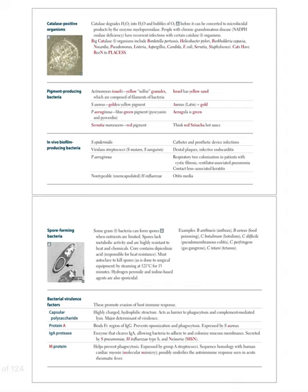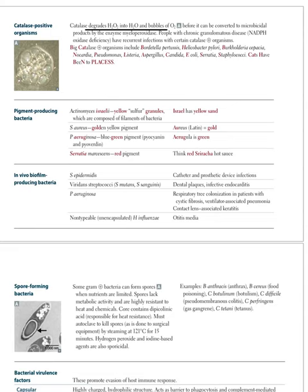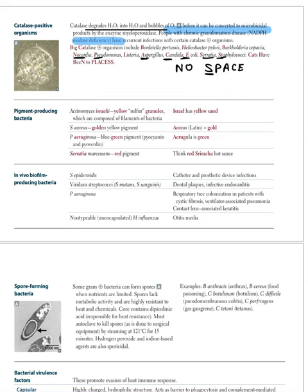Catalase-positive organisms — mnemonic 'No SPACE': N = Nocardia, S = Staphylococcus, P = Pseudomonas, A = Aspergillus, C = Candida, E = E. coli. Catalase degrades hydrogen peroxide. Key clinical implication: patients with chronic granulomatous disease (CGD — NADPH oxidase deficiency) have recurrent infections due to catalase-positive organisms. This is important pathology integration.